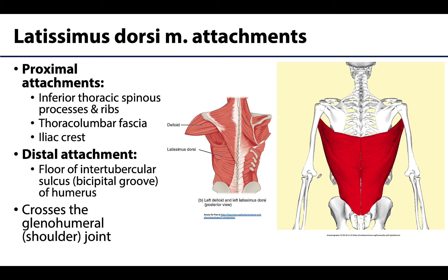Moving on to the latissimus dorsi muscle, which similar to the trapezius is a very expansive muscle but with a few important differences. One important one is that it is notably inferior — the trapezius is up in this region, whereas the latissimus is more inferiorly located, with proximal attachments on those thoracic spinous processes, some ribs, and it will even extend all the way to the iliac crest. If you put your hands on your hips, you're touching your iliac crest, so this muscle extends all the way down to that region.